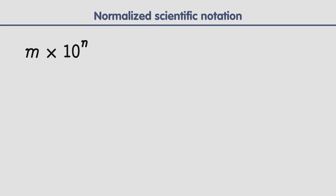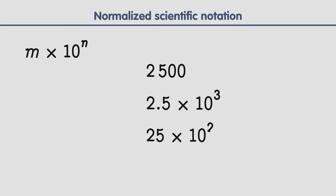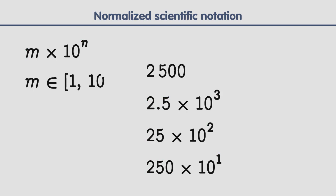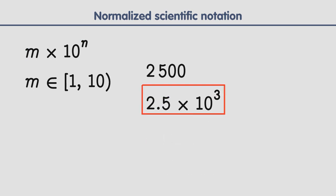A number can be written in scientific notation in many ways. For example, 2500 can be written in several different forms. In normalized scientific notation, the exponent n is chosen so that the value of m remains between 1 and 10. Thus, 2500 is written as 2.5 times 10 raised to the power of 3. This form allows easy comparison of numbers, since numbers with bigger exponents are larger than those with smaller exponents.